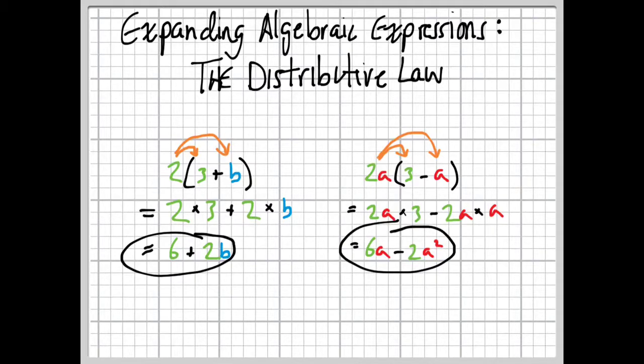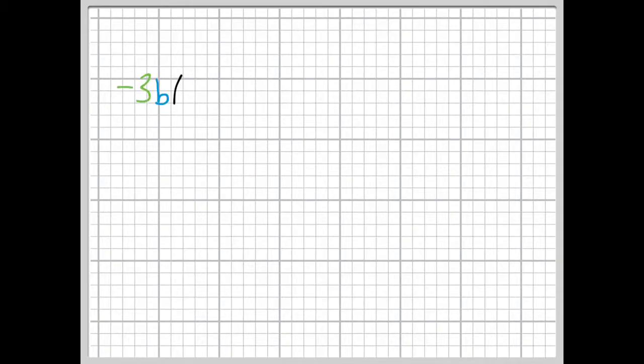Pretty easy, right? Well, let's look at some more examples. Here's an example, negative 3b times the quantity 2a plus 5b squared. That's a bit of a mouthful. All we're going to do, as before, take this thing on the outside, multiply it by the bits on the inside.